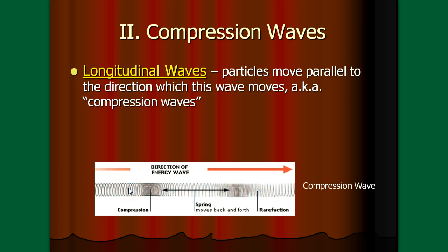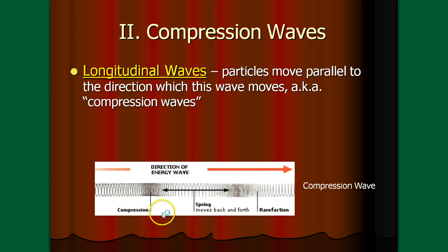It's still true, however, that this wave, just like the transverse wave, does not carry matter. A really good example of a longitudinal wave is a big long spring or a slinky. Each individual little ring of the slinky can be considered as an individual particle. As the wave moves past, that particle will move to the right and come back to the left, but it doesn't have any net direction of movement.